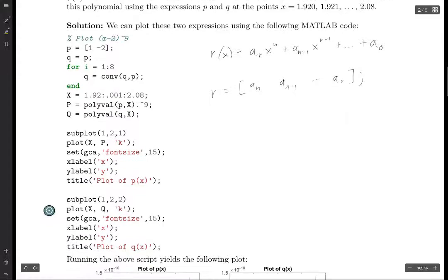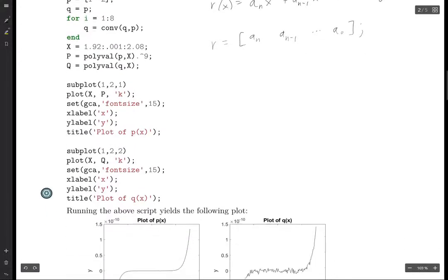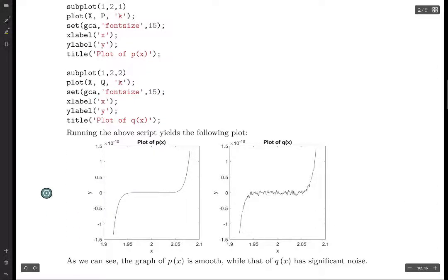So look at what happens with P of x. This is really smooth and it worked out really nicely. Whereas with Q of x, it got really wonky in here. So there's obviously some error that was introduced in the calculations.